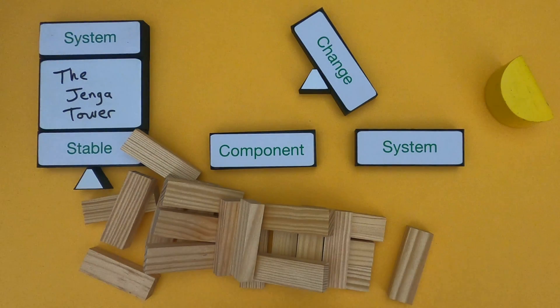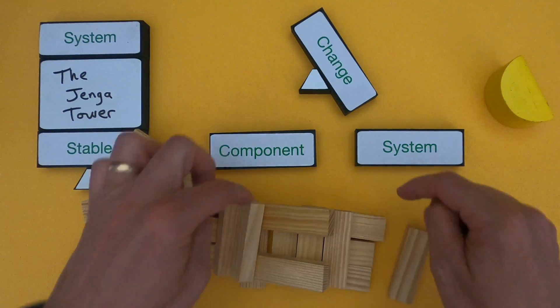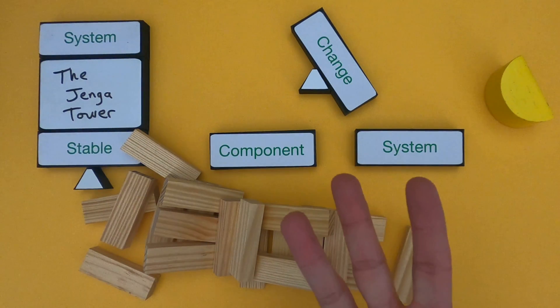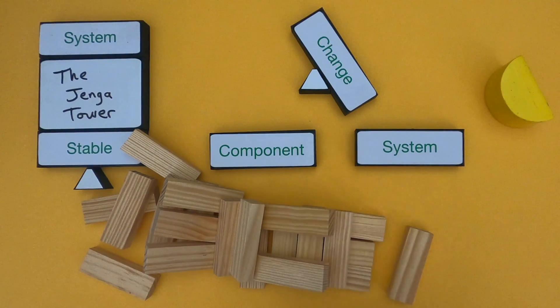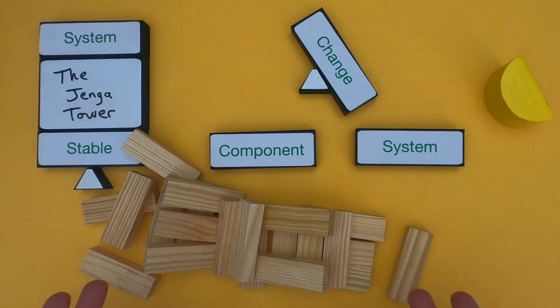But before I do that, could you pause the video and show me your thinking? Again, I was able to remove three blocks, move them to the top, and the fourth block made it fall. All I want you to do is pause the video, try to figure out what's the change in the components, what's the overall change in the system. Unpause the video, come back, and we'll see how our thinking kind of compares.